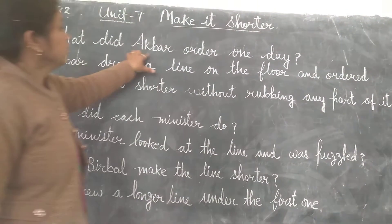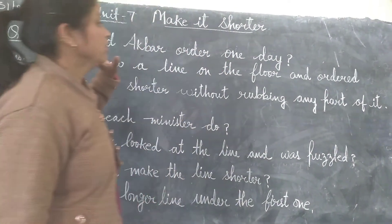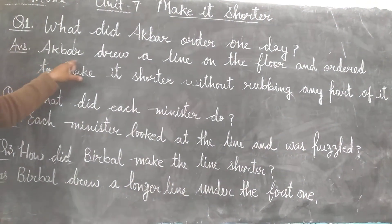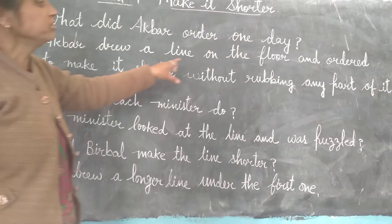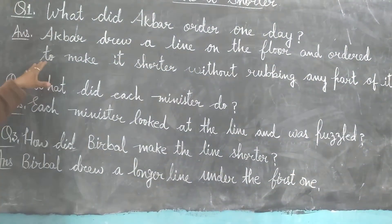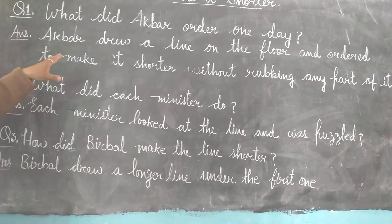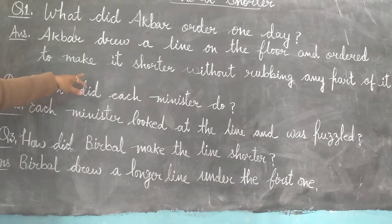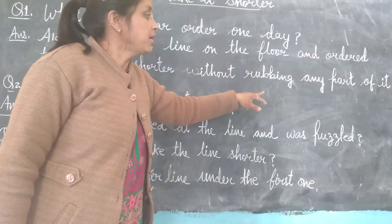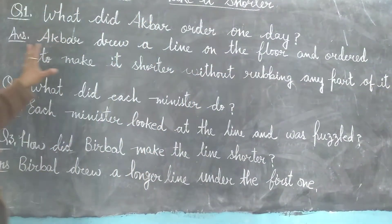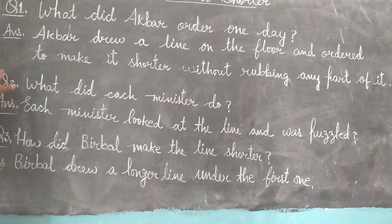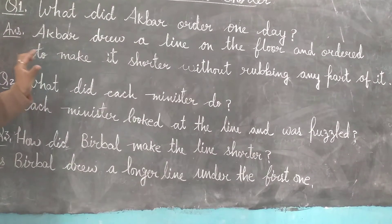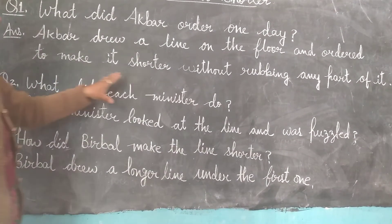What did Akbar order? The answer will be: Akbar drew a line on the floor and ordered to make it shorter without rubbing any part of it. You have to make it shorter without erasing it.